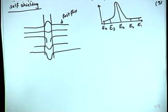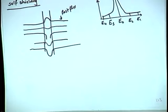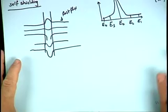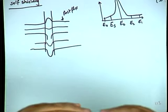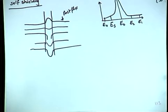In the moderation region, the flux goes like a constant divided by (σ_absorption × ξ × E). When the resonance absorption cross-section is very high, the flux develops a dip, and the absorption decreases — this is energy self-shielding.